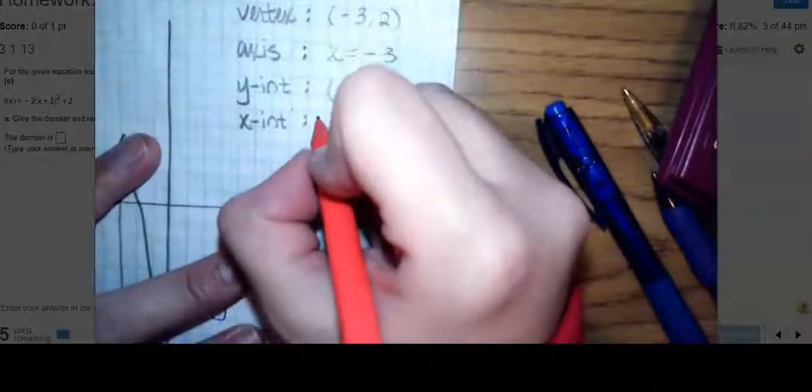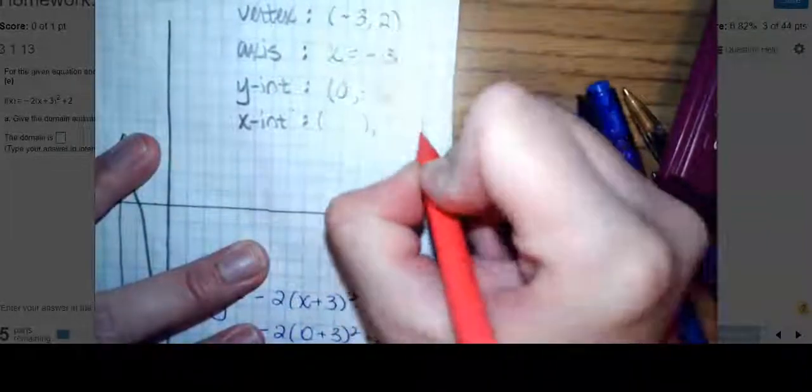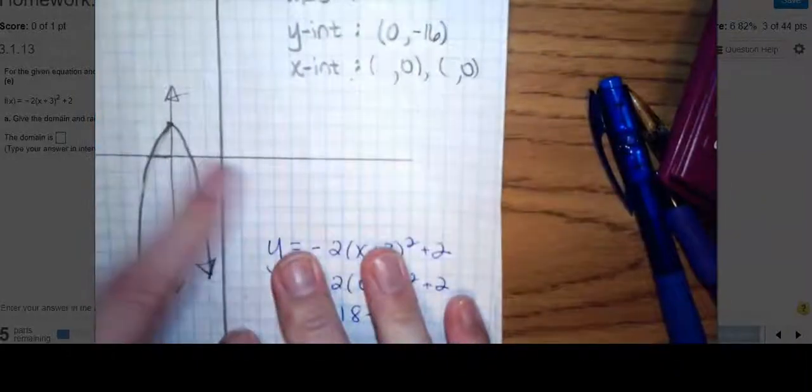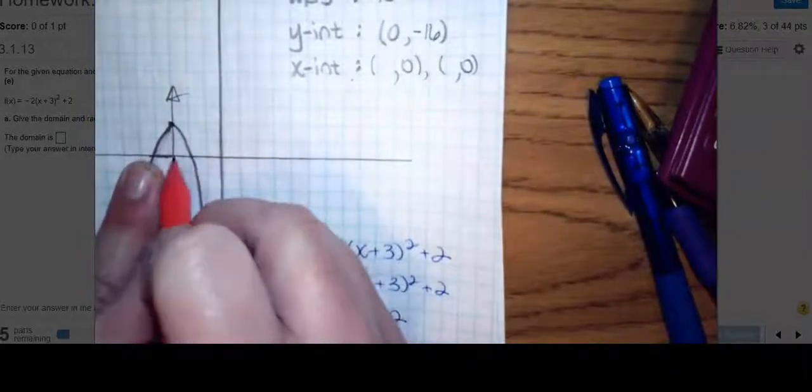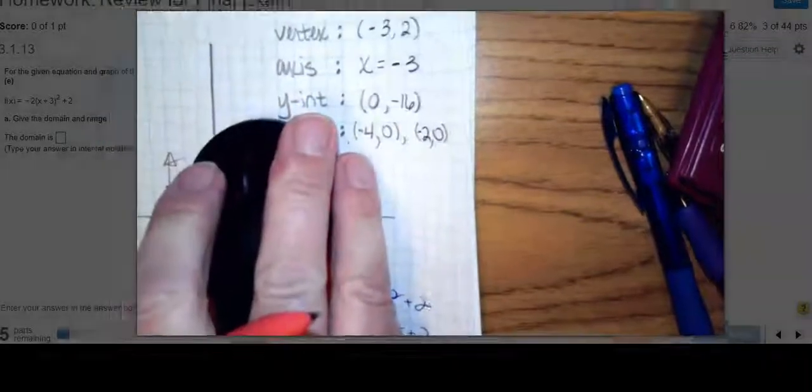What are your x-intercepts? You're going to have two x-intercepts. Where do they hit the axis? They're both going to have y-coordinates of 0. What is this one? 1, 2, 3, 4. What is this one? 1, 2. So one is -4 and one is -2.